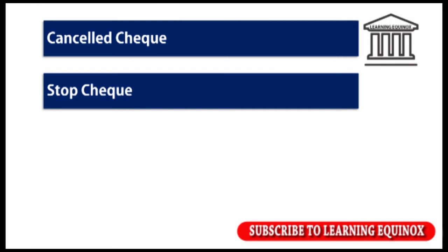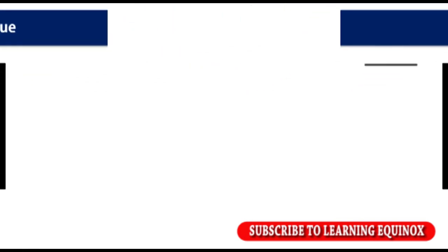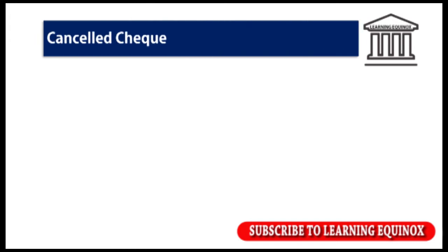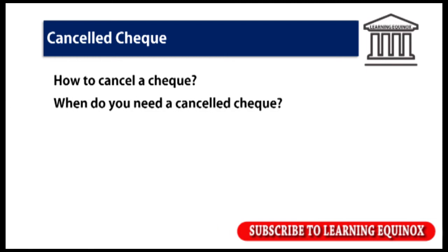Watch this video till the end to get a glimpse of the impact of the Negotiable Instrument Act on two types of instrument: the cancelling of a check and stopping of a check. So let's get started with this. Firstly, we shall look at cancellation of a check — how to cancel a check and what you need in case of a cancelled check and all other situations where you need to cancel a check.